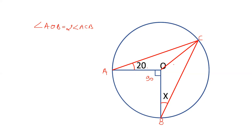Let's join O to C. Now OA and OC are radius. In triangle AOC, if two sides are equal, then the angles opposite to equal sides are equal. And therefore, angle OAC and OCA both are 20 degrees.